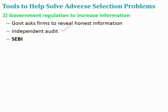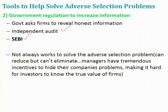Other countries also follow this practice. For example, in India the Securities and Exchange Board of India — SEBI — requires all listed companies to publish their balance sheet, audited through independent audit agencies. What we can see here is that we cannot completely eliminate the adverse selection problem. What we can do — what the government can do — is reduce it. However, the issue is that managers have tremendous incentives to hide their company's problems, making it hard for investors to know the true value of firms. They may hide debt obligations, postpone them, or make some manipulation in reported profits.